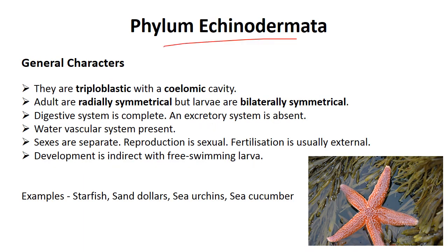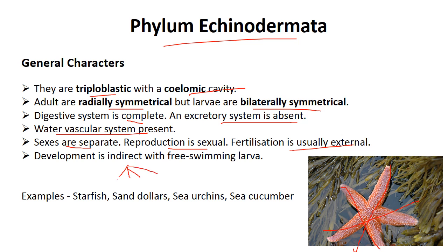Next phylum is Echinodermata. They are triploblastic — ectoderm, endoderm, and mesoderm — and true coelomates. Adult echinoderms are radially symmetrical, but larvae are bilaterally symmetrical. The digestive system is complete but there is no excretion system. The most important character of phylum Echinodermata is the water vascular system. Sexes are totally separated and reproduction is sexual; fertilization is external. They have a huge variety of larval stages, and the larvae are totally free-swimming. Examples: starfish, sand dollar, sea urchin, and sea cucumber.